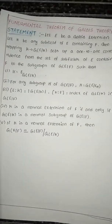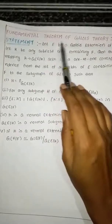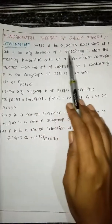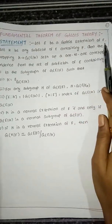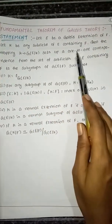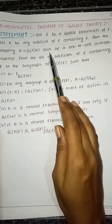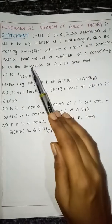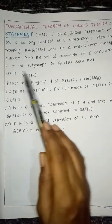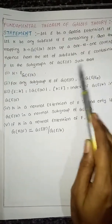And let us go to the theorem. This is the theorem — the fundamental theorem of Galois theory. Here is the statement. Let E be a Galois extension of F. Let K be any subfield of E containing F. Then the mapping K tends to G(E/K) sets up a one-to-one correspondence from the set of subfields of E containing F to the subgroups of G(E/F), such that: